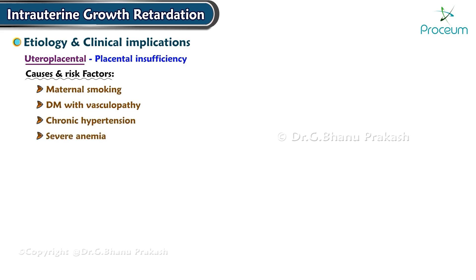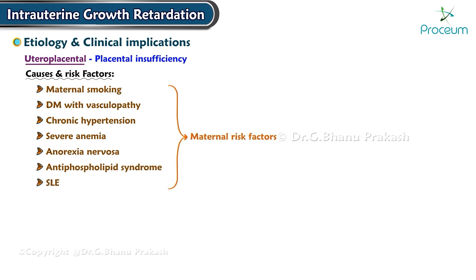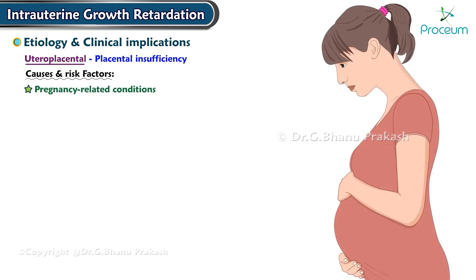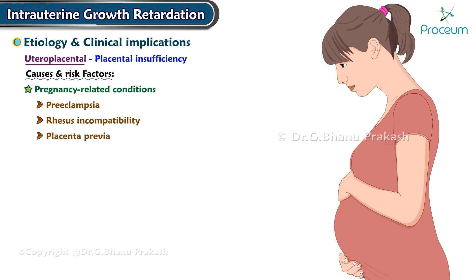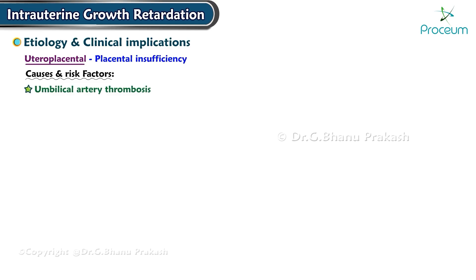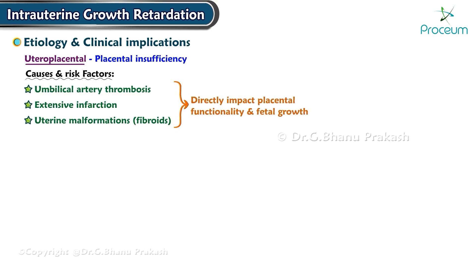Significant maternal risk factors include diabetes mellitus with vasculopathy, chronic hypertension, severe anemia, anorexia nervosa, antiphospholipid syndrome, and systemic lupus erythematosus. Pregnancy-related conditions such as preeclampsia, rhesus incompatibility, placenta previa, multiple gestations, and placental abruption also contribute. Umbilical artery thrombosis, extensive infarction, and uterine malformations such as fibroids can directly impact placental functionality and fetal growth.